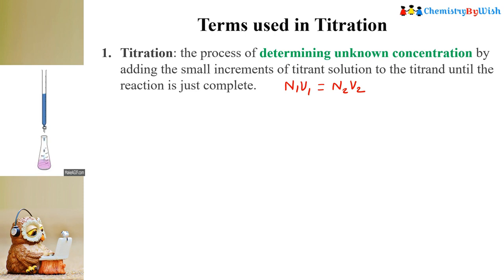So what we need to do is put the normality or concentration of the known solution and its volume of titration, and after that we have the unknown concentration solution and its volume. By using this formula we can actually determine the concentration of the unknown one. So this is called titration.